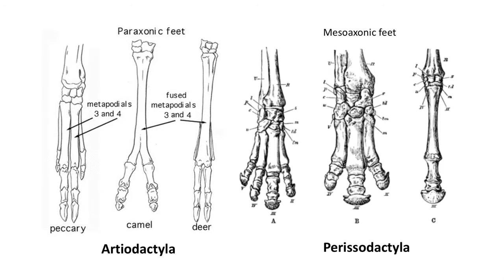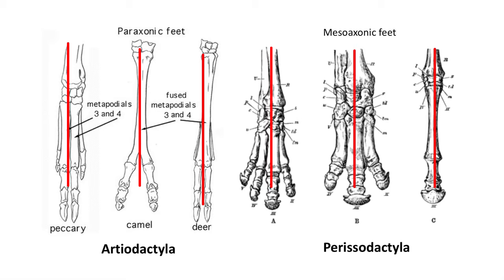In this video we're going to look at the diversity of extinct perissodactyls. A much better way of dividing ungulate mammals in the fossil record is whether they have the axis of the feet down the third metatarsal — the mesaxonic condition — or between the second and third metatarsal, the paraxonic condition. All the mammals discussed in this video are mesaxonic, with the third metatarsal providing the bulk of support to the foot.